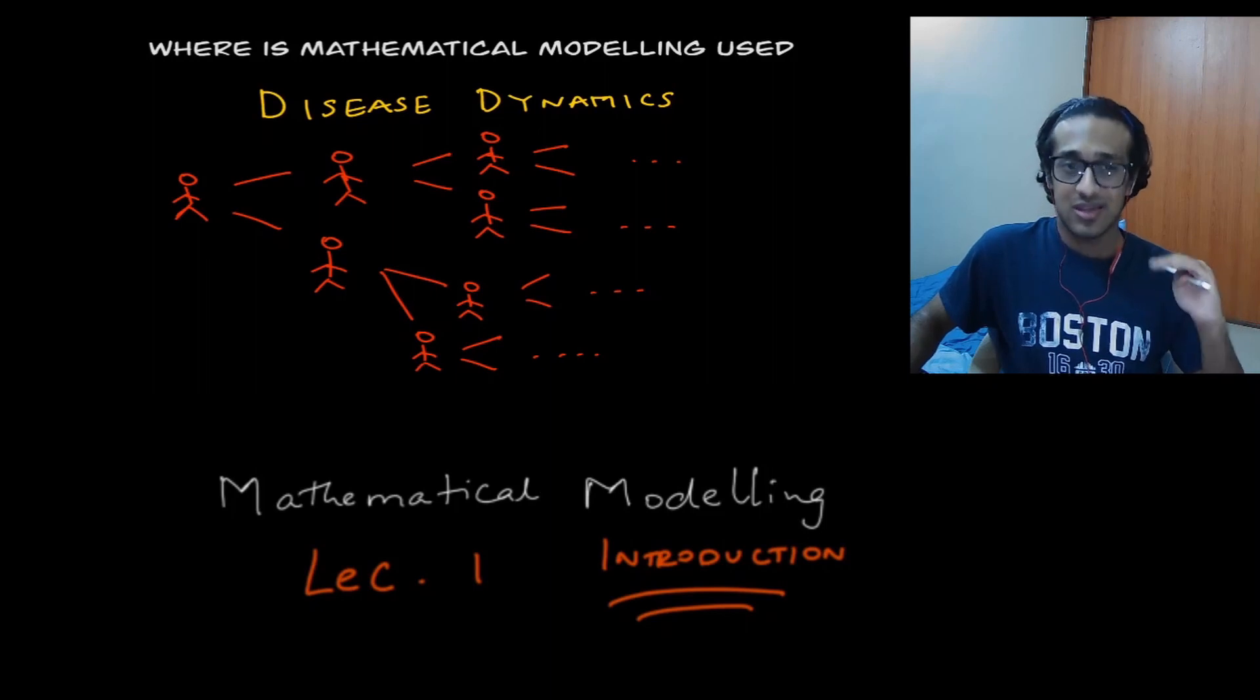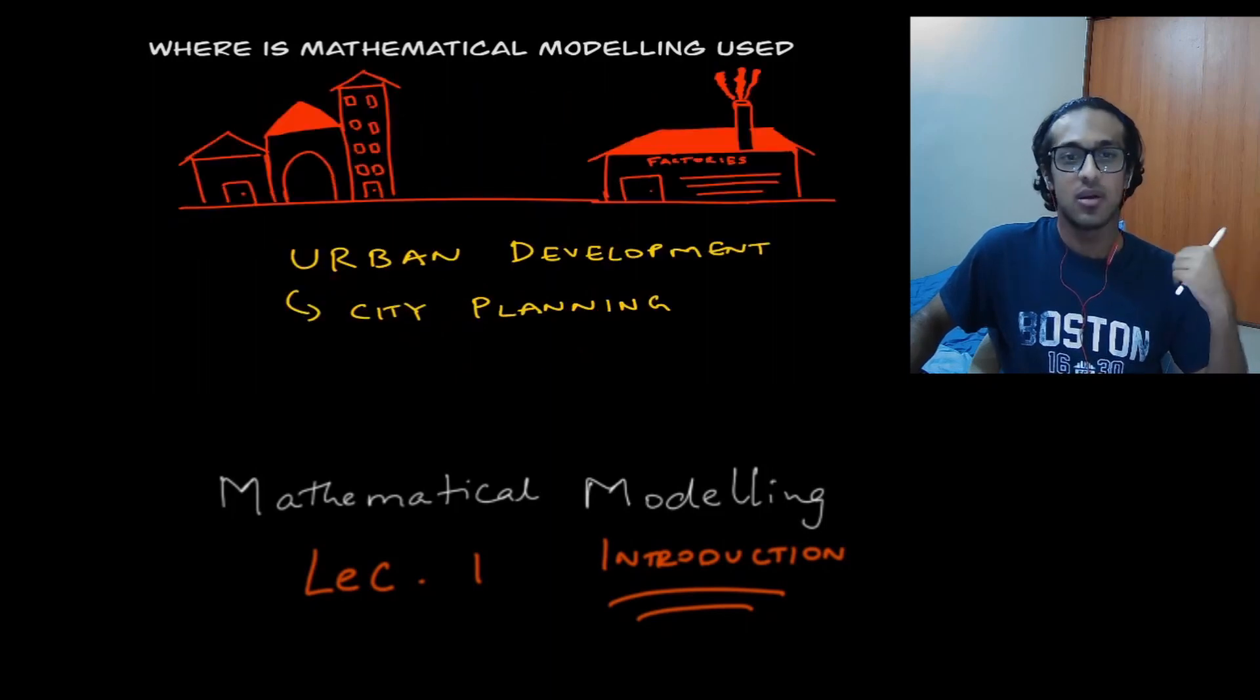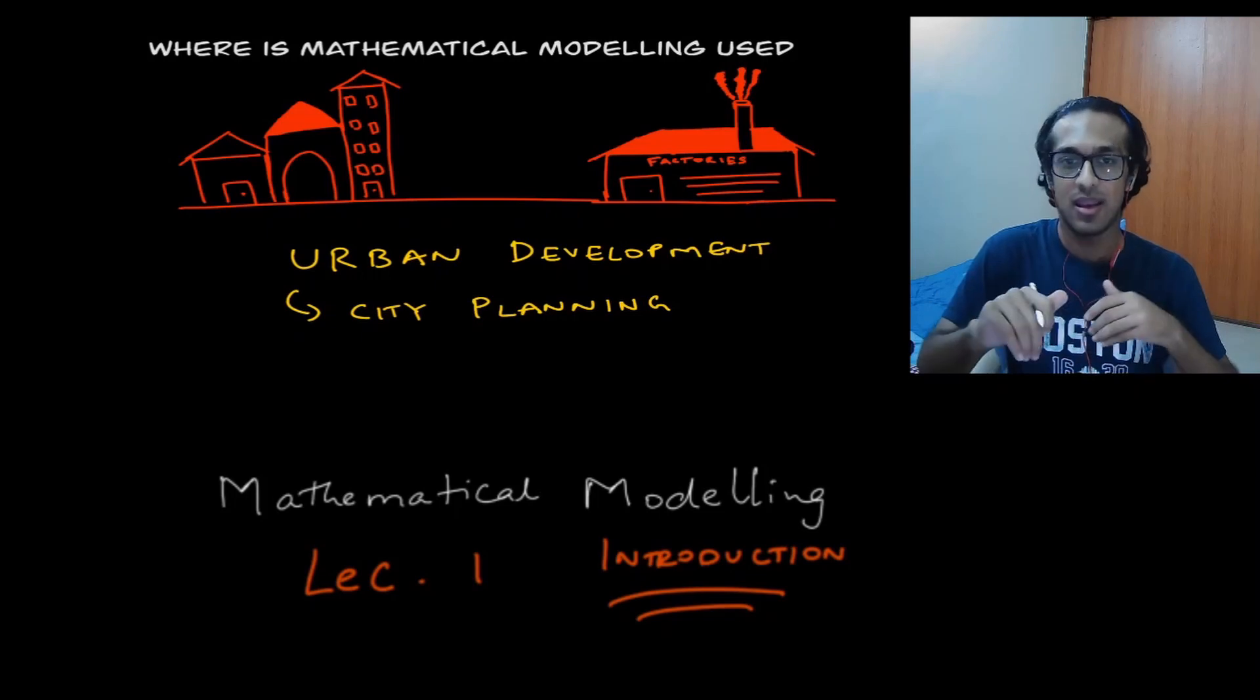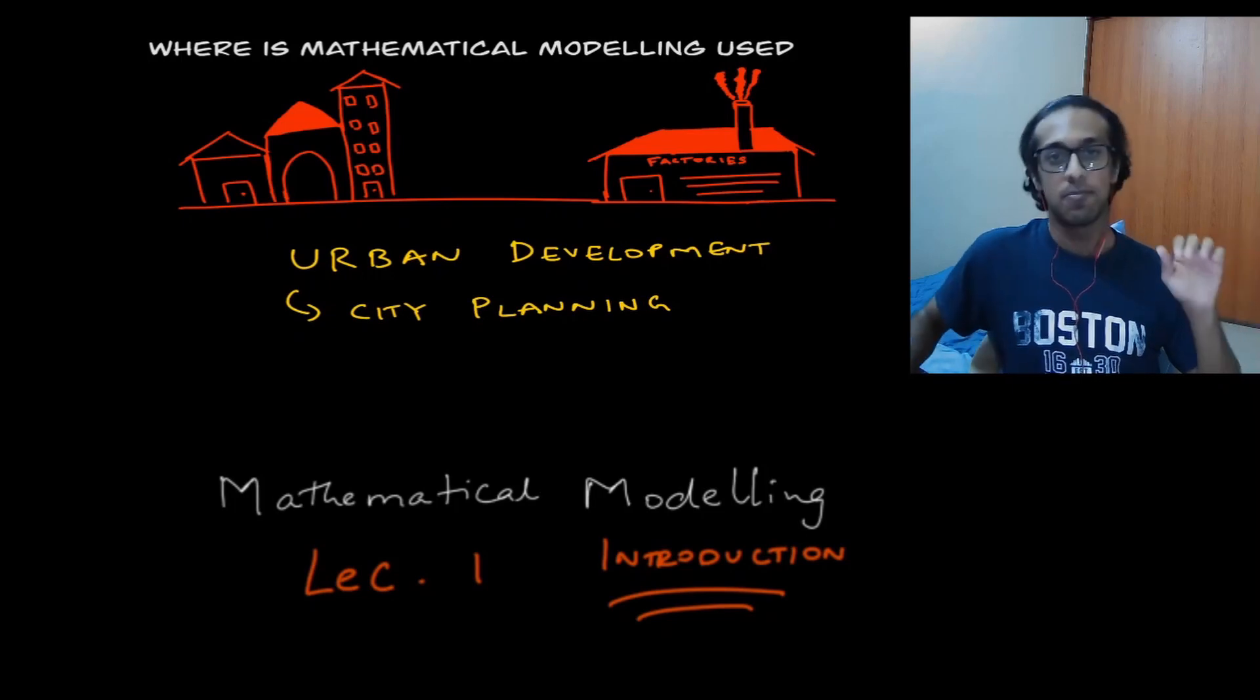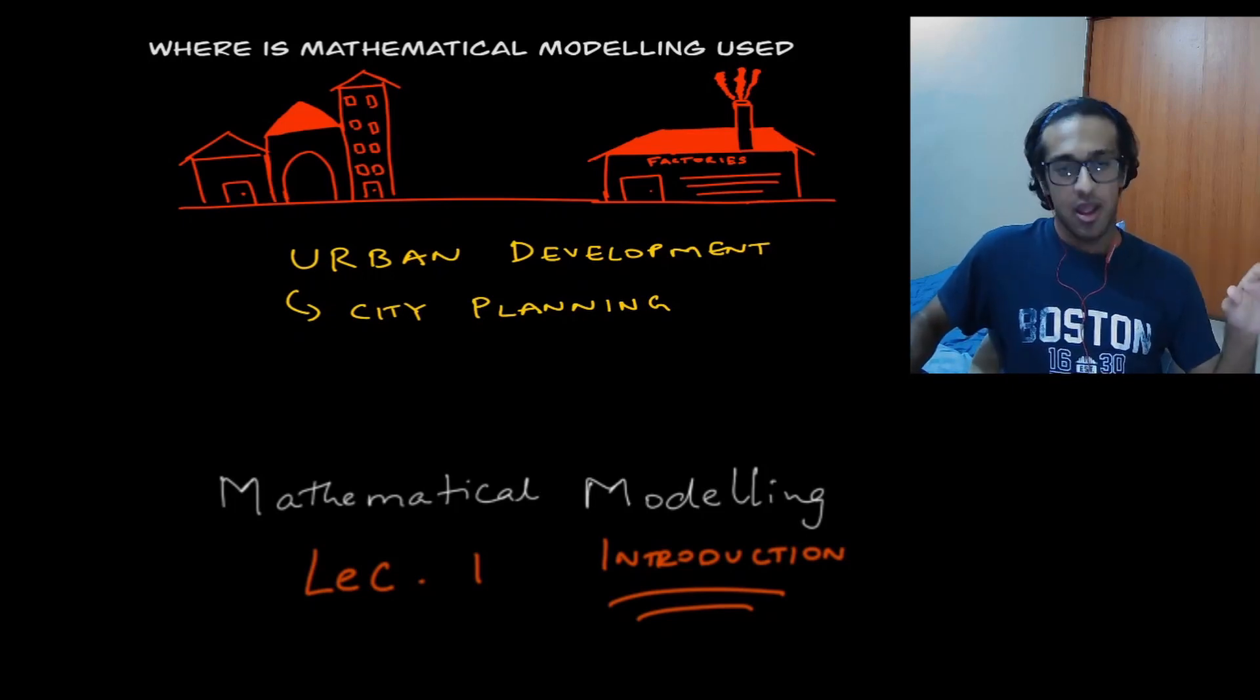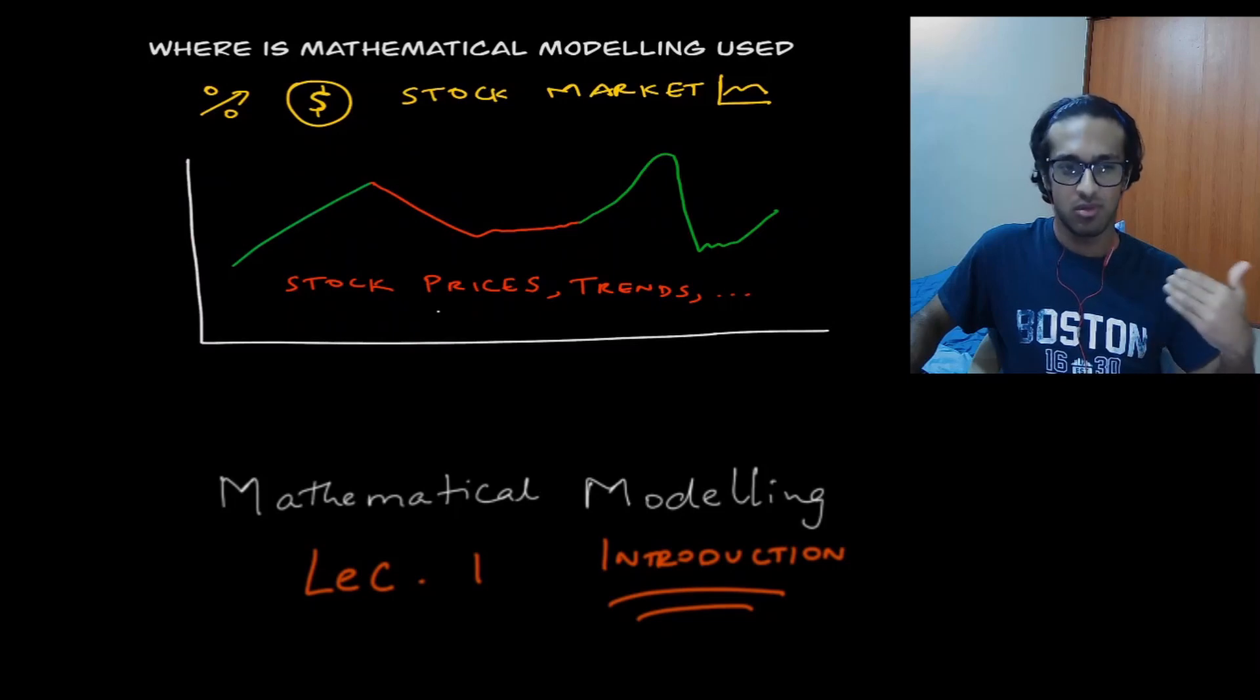Another extremely common use of mathematical modeling is in urban development and city planning. So where do we keep the factories and how can we change the ways factories function so that the pollution is extremely less? How do we plan buildings so that there is no overcrowding and water consumption is done in a very precise manner?